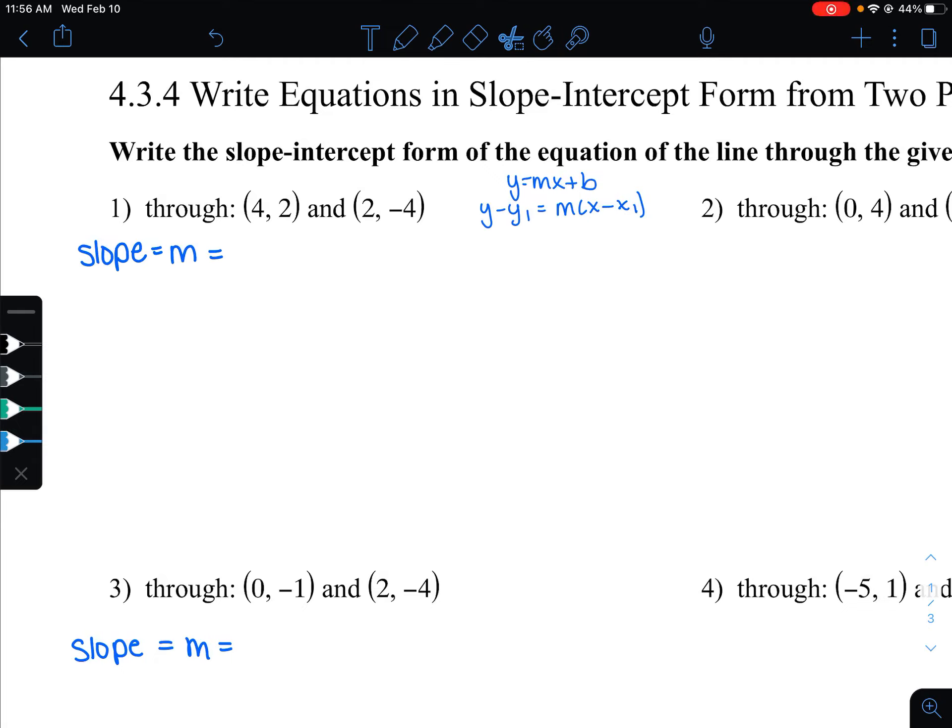All right, now we're going to go over how to write equations in slope-intercept form from two points. So remember, y equals mx plus b is our slope-intercept form. I'm also going to use point-slope form in this lesson, which is y minus y1 equals mx minus x1.